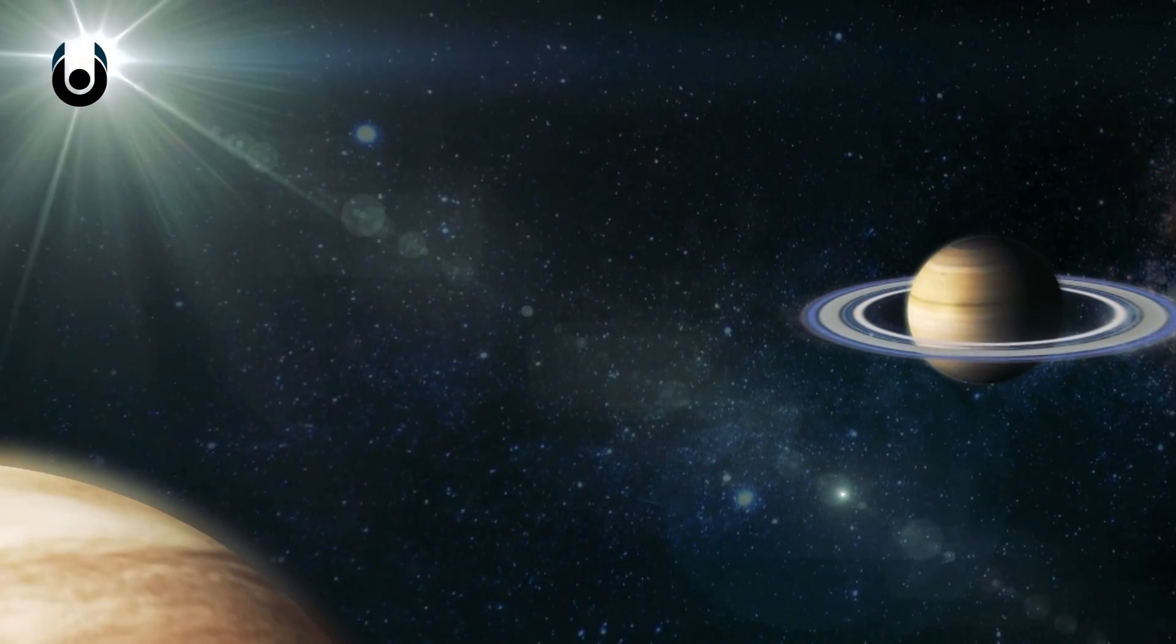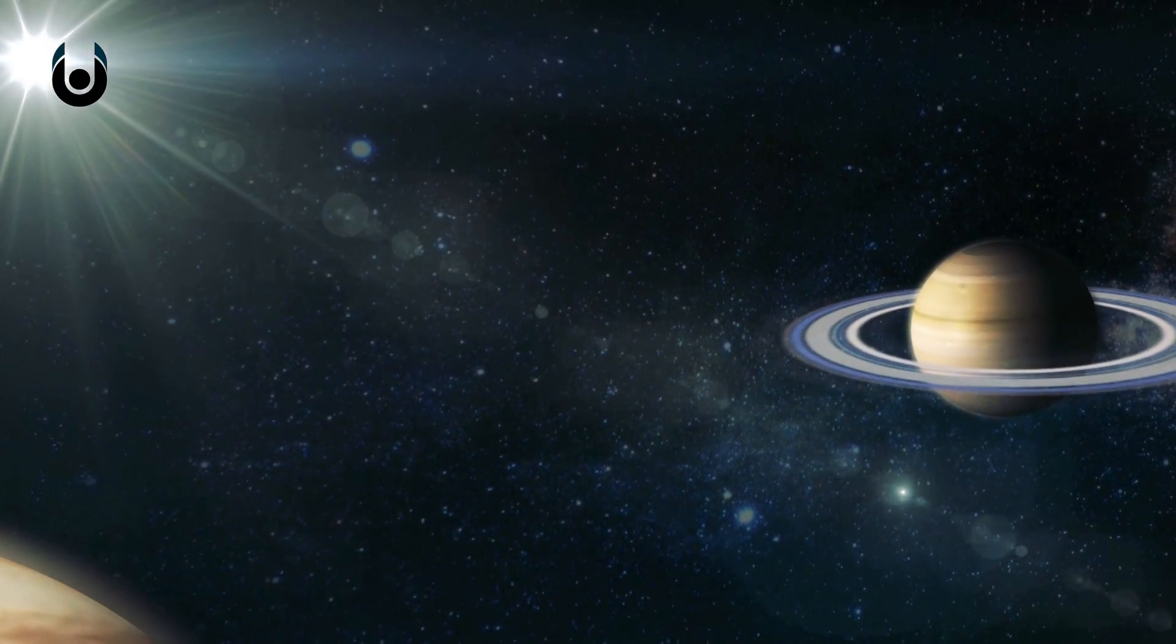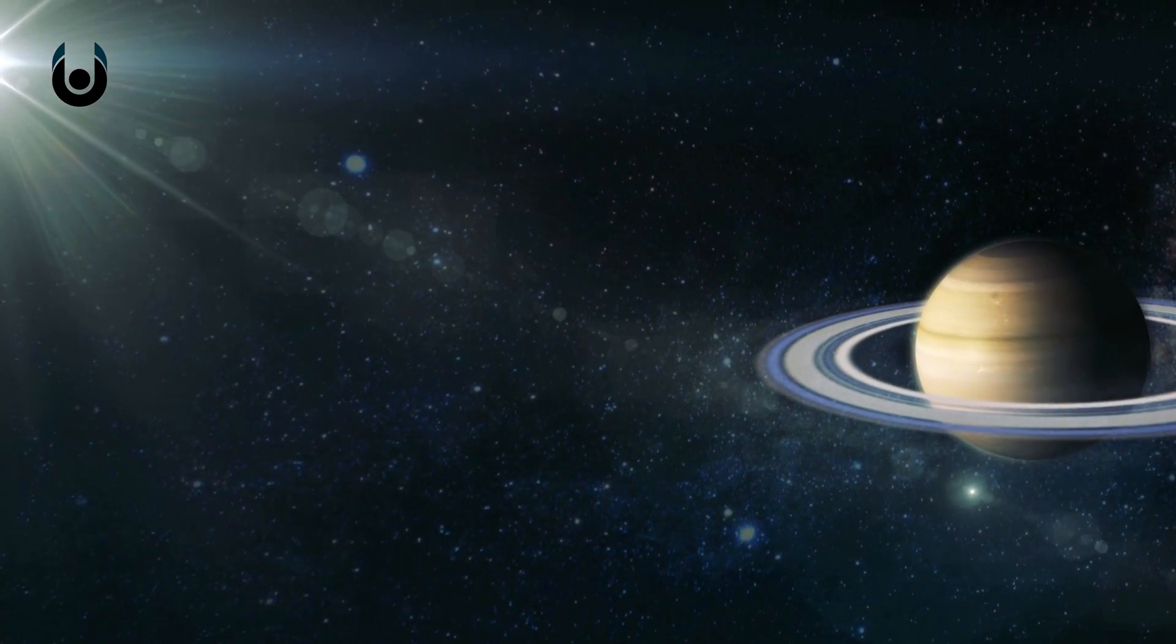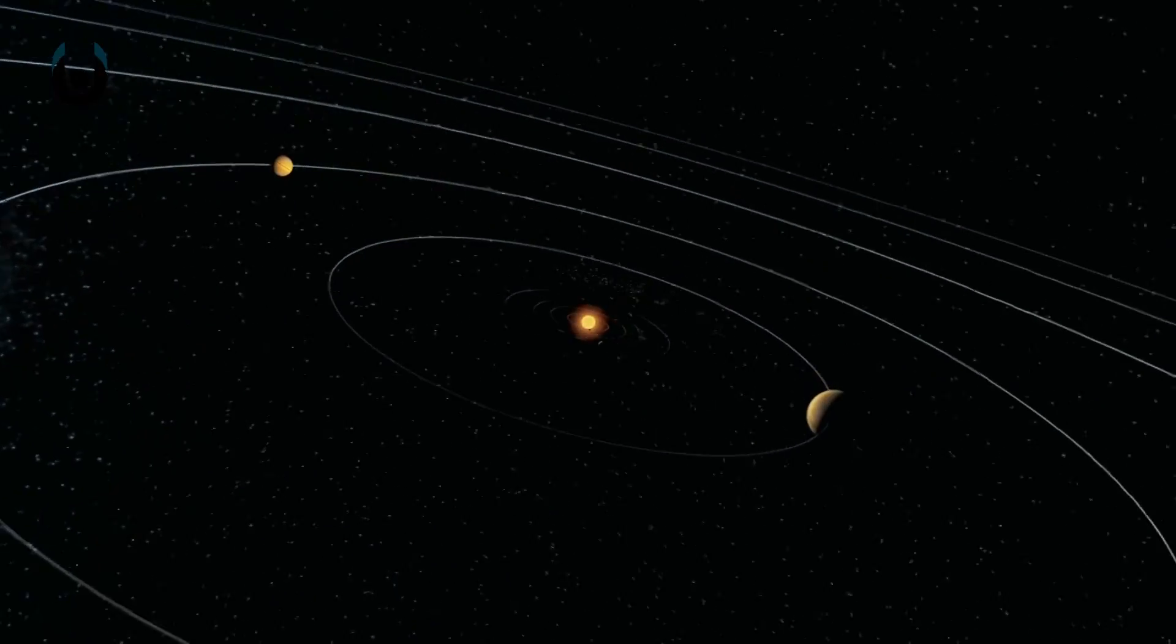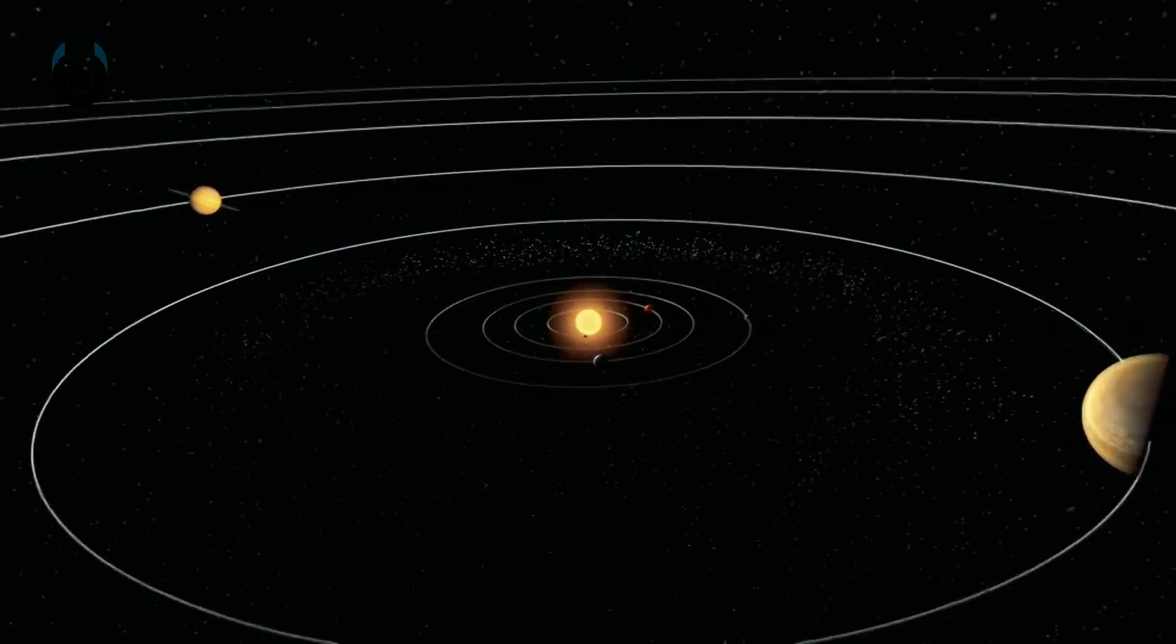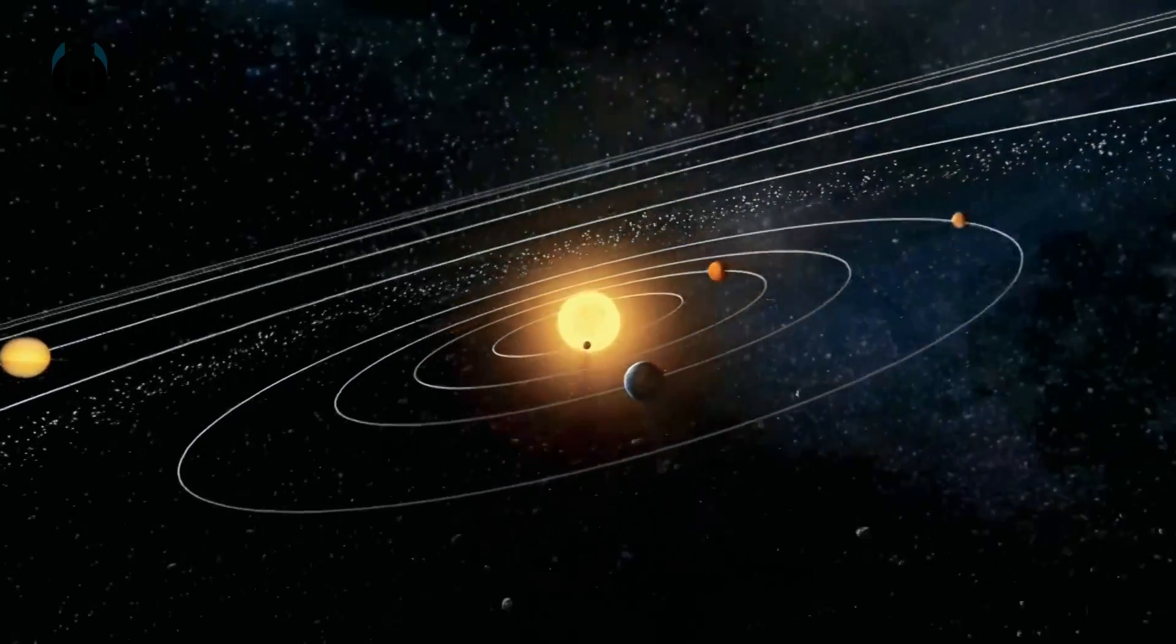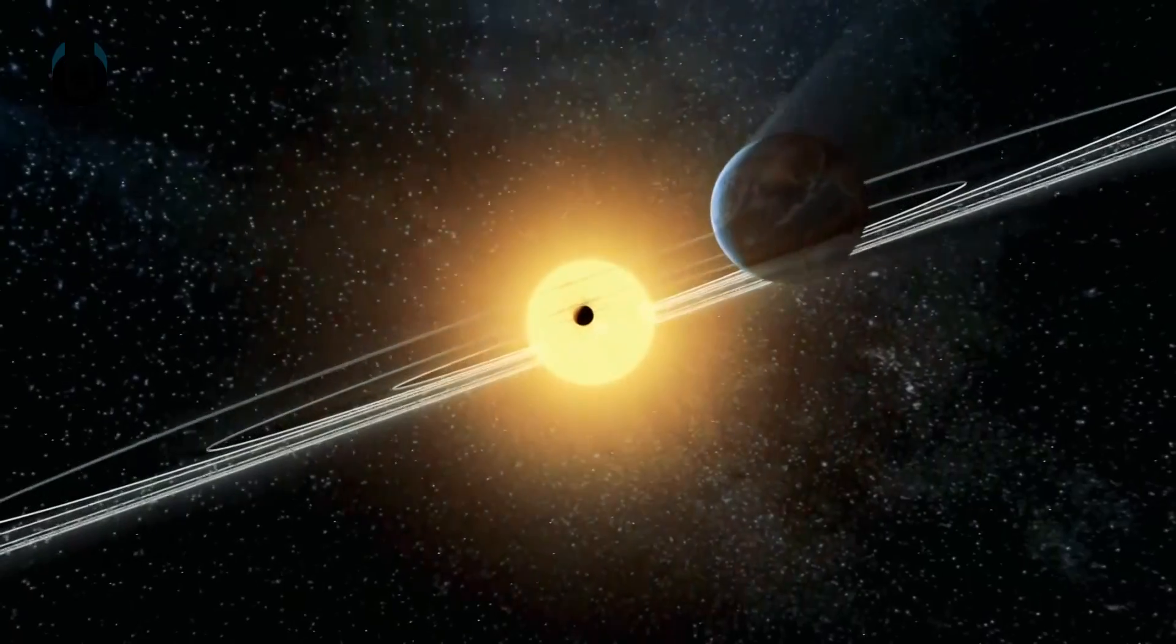One of the best arguments for a round Earth might be that other planets in our solar system are round. This basically says that the chances that the Earth is the only planet in our solar system that is non-spherical, yet subject to the same forces as other planets, are zero.